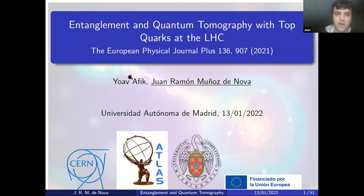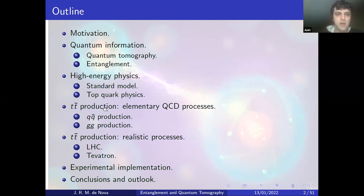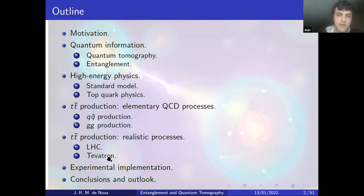This work was done in collaboration with the physics department of CERN. I will begin by giving a brief overview of the talk: first, some motivation to study our problem; then basics of quantum information, specifically quantum tomography and entanglement; then a review of the high energy physics part, including the standard model and top quark physics, top anti-top production at leading order, and realistic hadronic processes; and finally, conclusions and outlook.